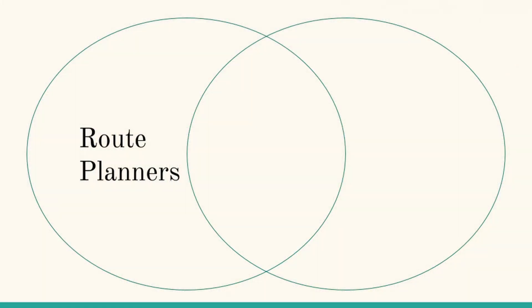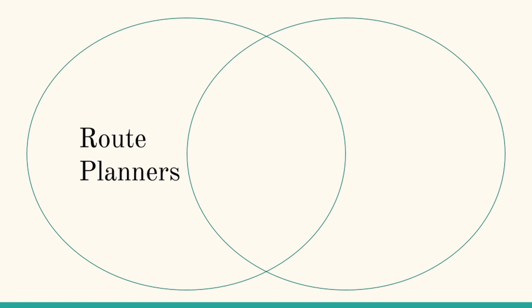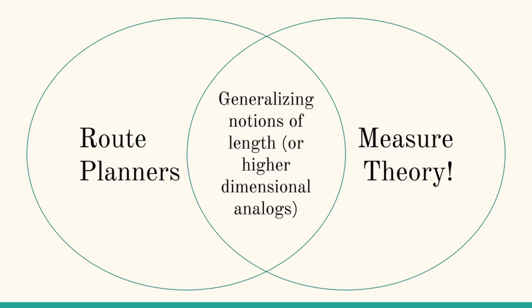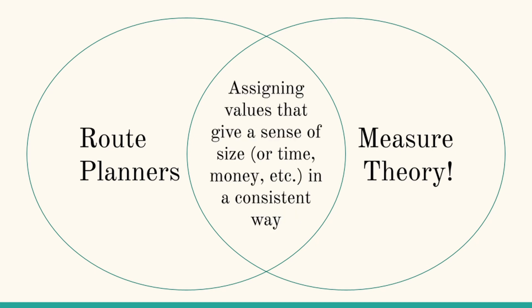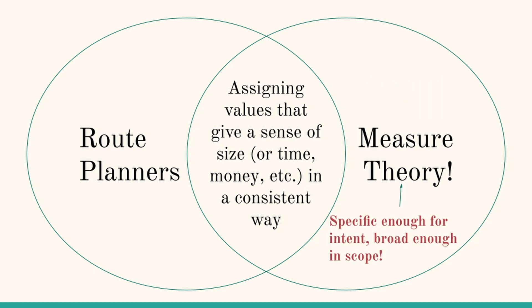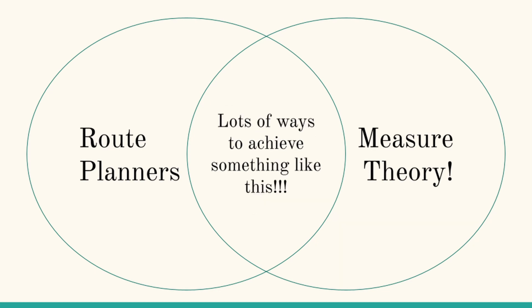Thus, one can draw a perhaps very unexpected comparison between route planners and measure theory. The latter also tries to generalize notions of length, or if we consider higher dimensions, area and volume. This theory seeks to assign measures to objects — a number which gives a sense of the object's size. What's great about this name is that it gives a really good idea of what the theory is trying to do, but it still allows for generalization, because we can measure various quantities of an object based on the tools we have at our disposal.